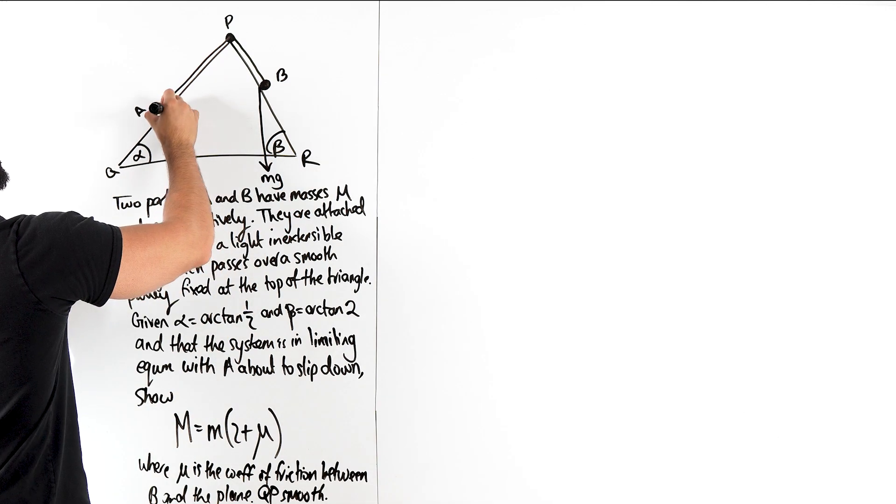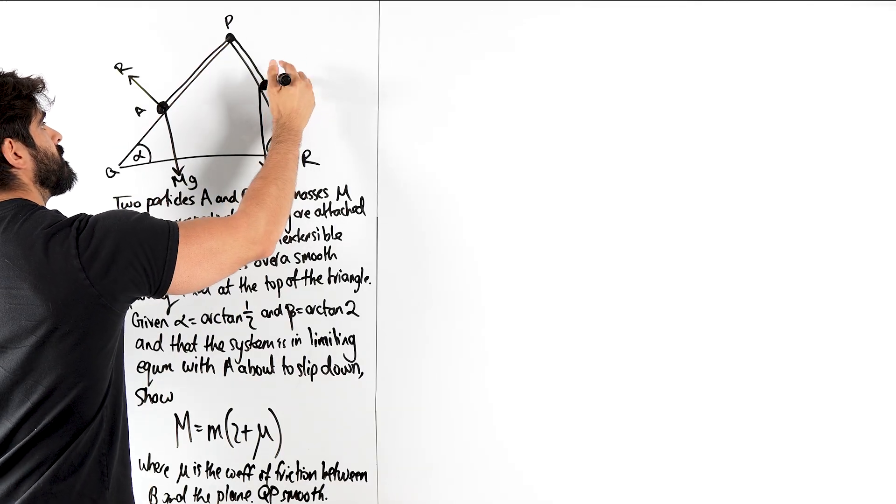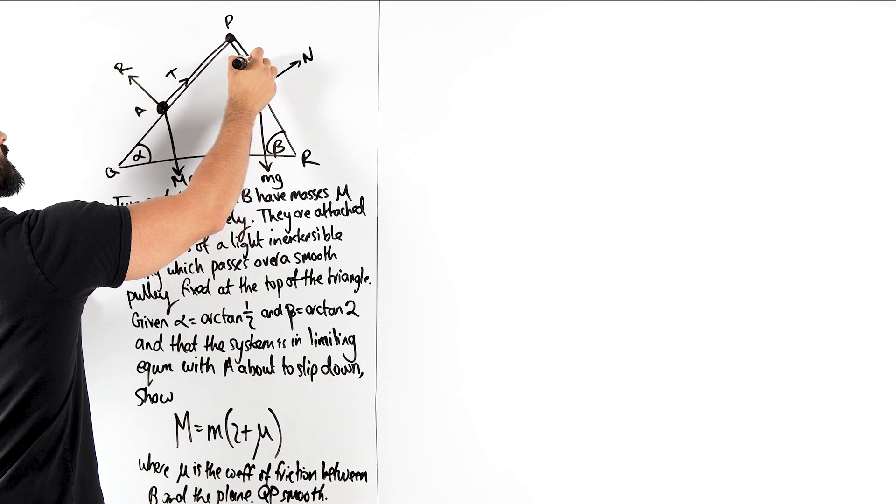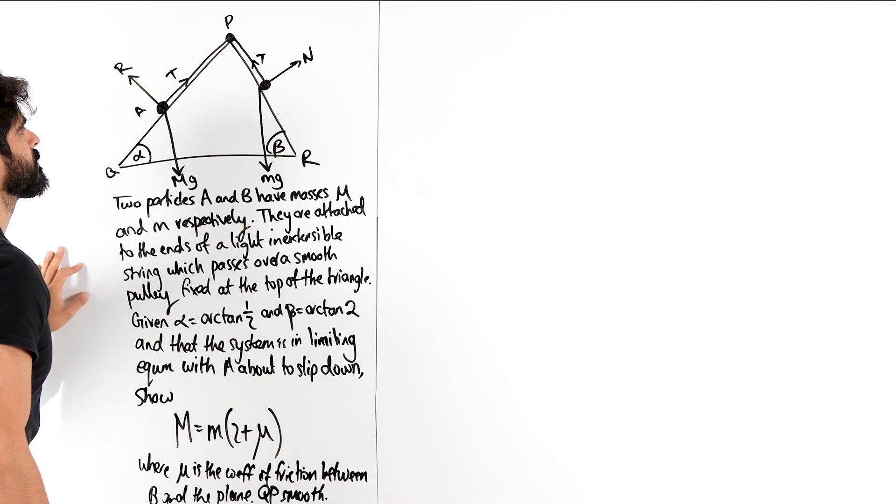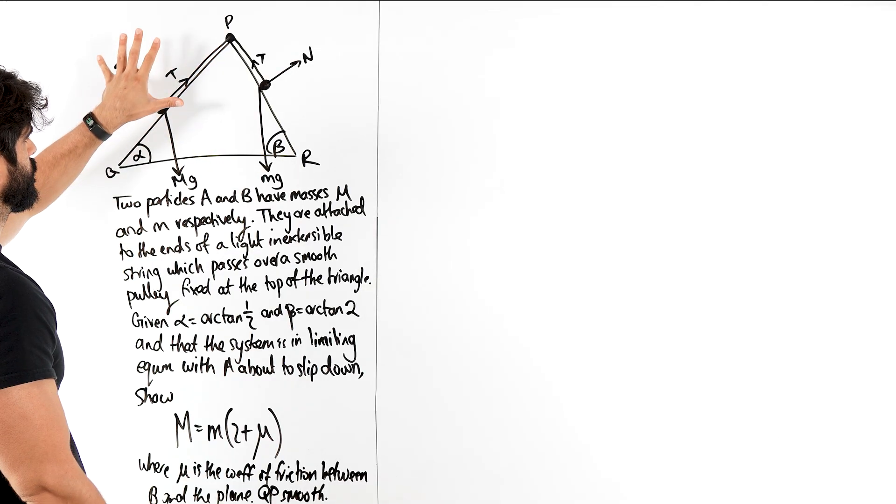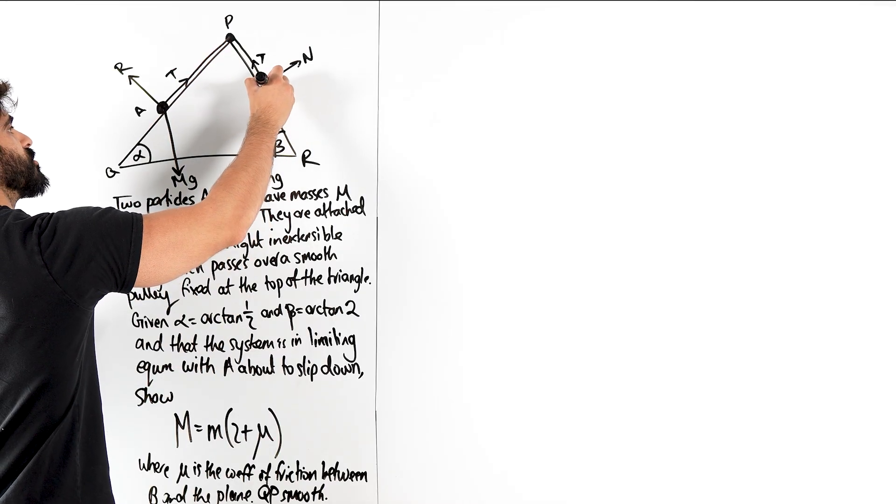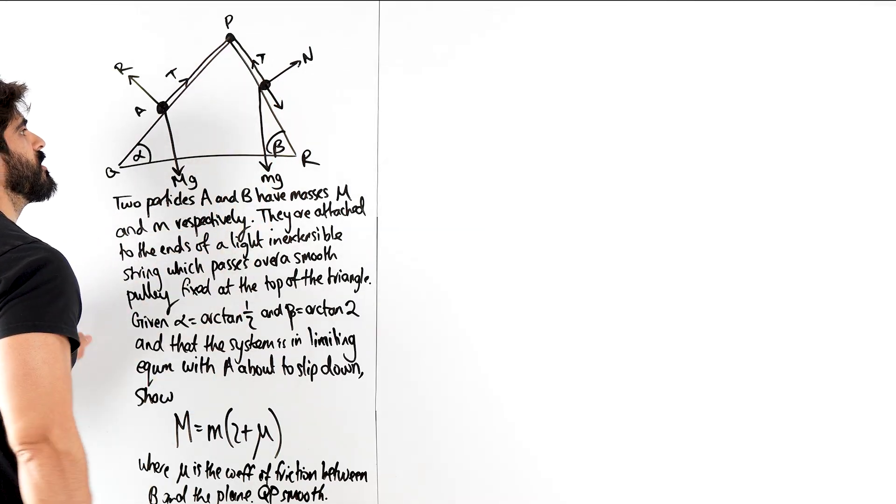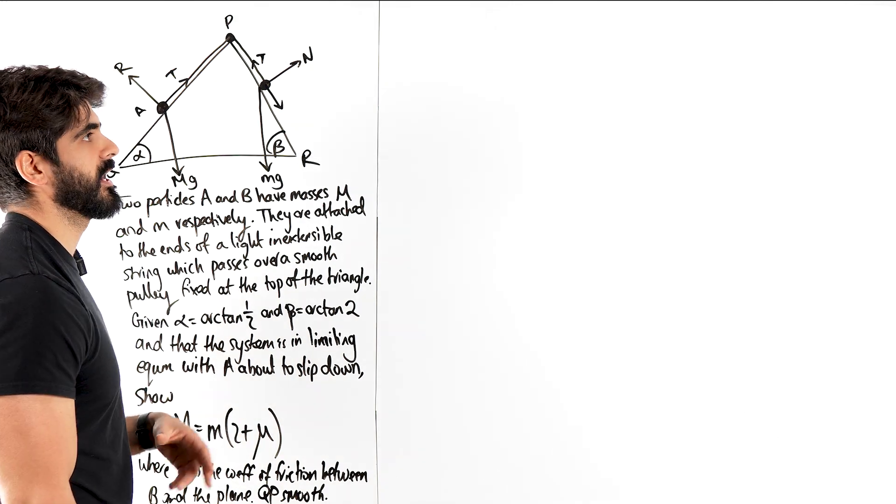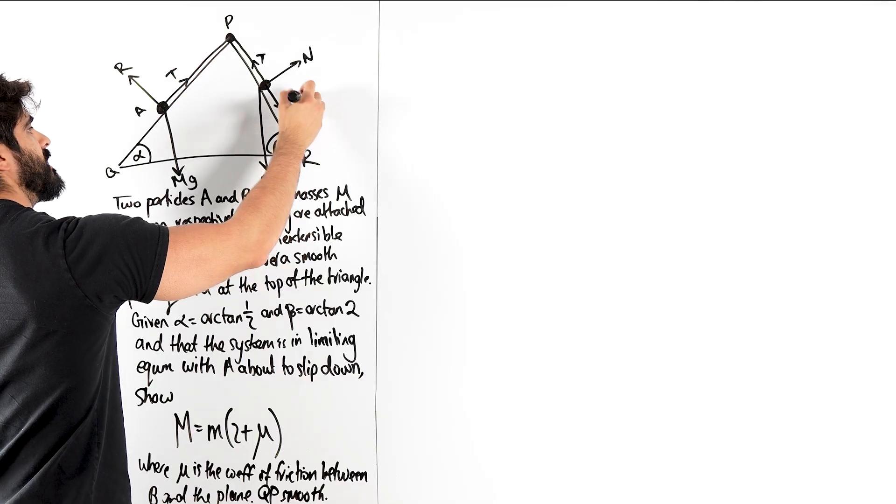They're both resting on surfaces, so we'll call that R and that B, let's call it N, normal reaction. We have the tensions running through the string. We also have that A is on a smooth surface, B is on a rough surface. Now A wants to move down the plane. A is about to slip down which means for B the friction is pointing down the plane and it's acting at its maximum because we have limiting equilibrium.